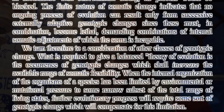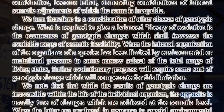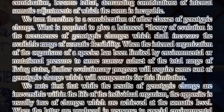We turn, therefore, to a consideration of other classes of genotypic change. What is required to give a balanced theory of evolution is the occurrence of genotypic changes which shall increase the available range of somatic flexibility. When the internal organization of the organisms as a species has been limited by environmental or mutational pressure to some narrow subset of the total range of living states, further evolutionary progress will require some sort of genotypic change which will compensate for this limitation.